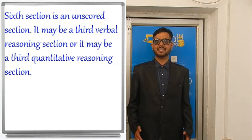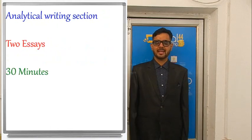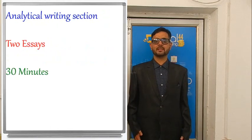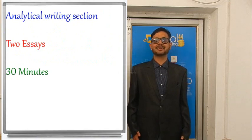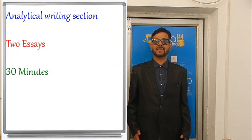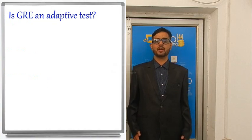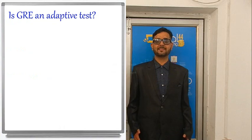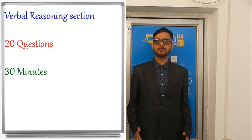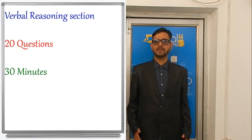You will get a ten-minute break after the third section. In the analytical writing section, you have to write two essays — one analyzing an issue and one analyzing an argument — and 30 minutes will be given for each essay. In the quantitative reasoning section, 20 questions will be asked and you will be given 35 minutes. In the verbal reasoning section, 20 questions will be asked and you will be given 30 minutes.